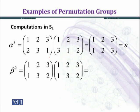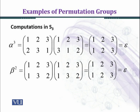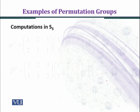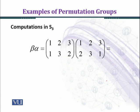For beta squared, we multiply beta with beta: 1→1→1, 2→3→2, 3→2→3, giving the identity permutation. So the order of beta is 2, and the order of alpha is 3, since alpha cubed equals the identity permutation.